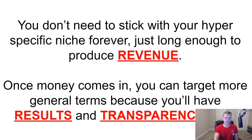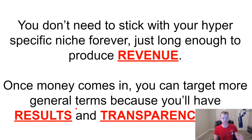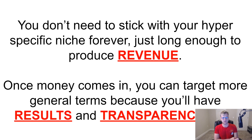Once you start making money — which we're going to be continuing with in the next videos on how to create a website that actually sells — that's when you want to start going to something more general. Once money comes in, you can target more general terms because you'll have results, and transparency sells results. If you have five websites doing really well with iPhone repair and you can show those websites and list the contact information for the owners, the people who want to buy from you will see that you're a transparent company making money for your clients.